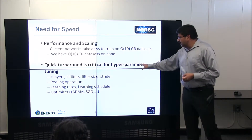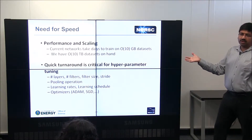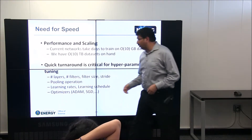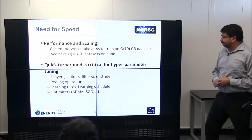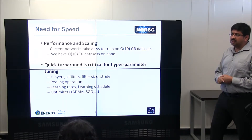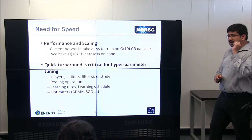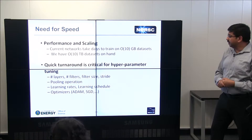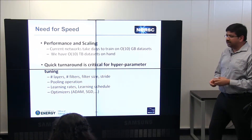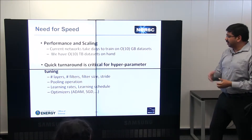Earlier I mentioned the hyperparameter tuning problem: how do you decide what architecture to use? You have to make calls on what layers you want, how many filters, what nonlinearities, learning rates, optimizers, and so on. There are at least 50 different combinations you can come up with, and if one combination takes a week to execute, there's no way you'll be experimenting effectively. Chances are you'll end up with something suboptimal, which doesn't do justice to the science or the computer science.